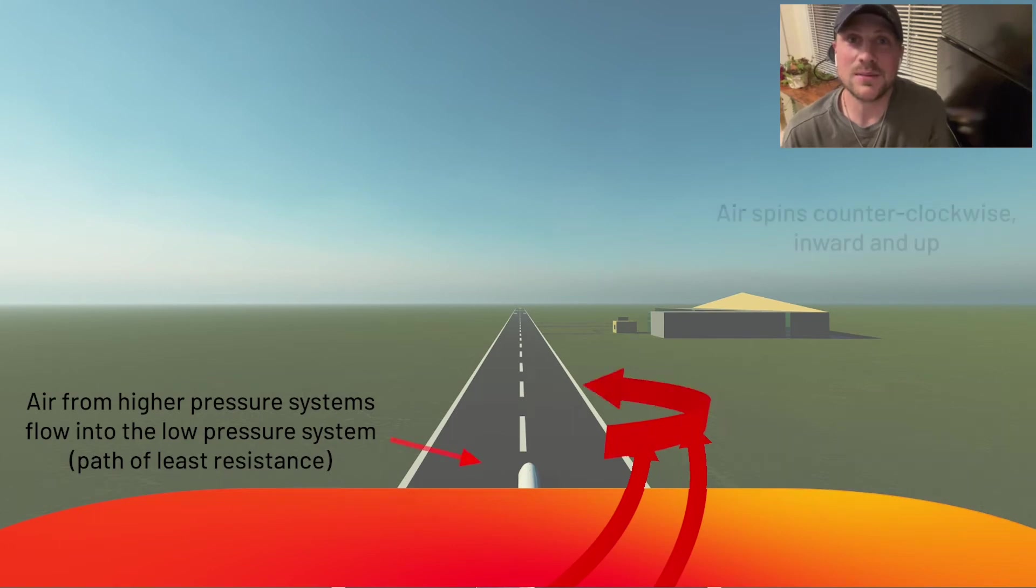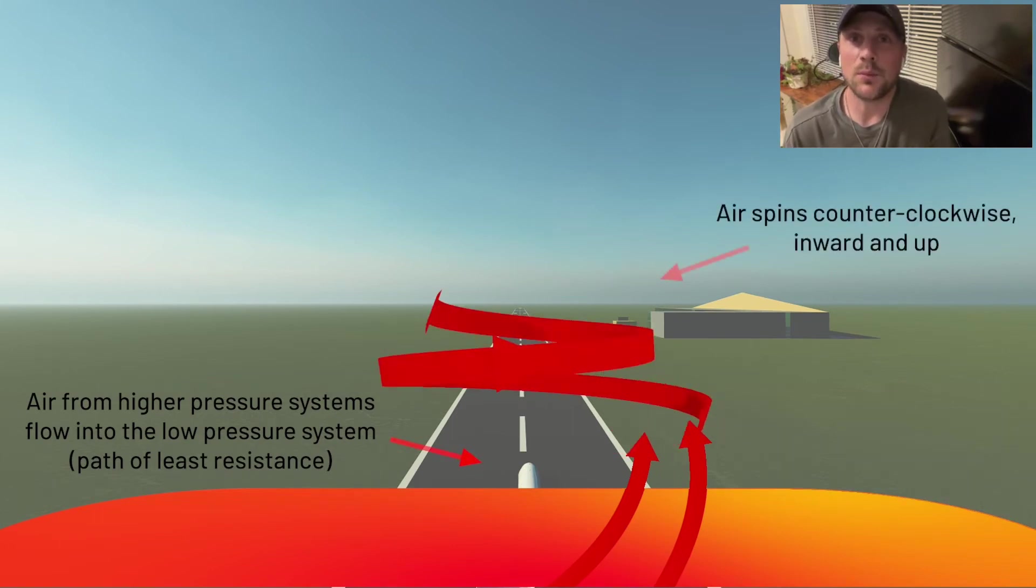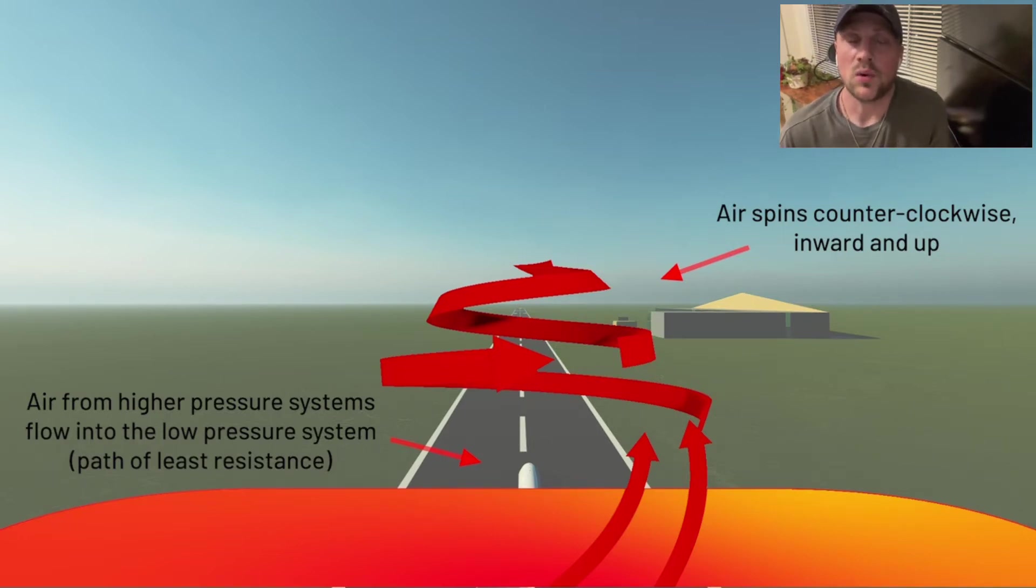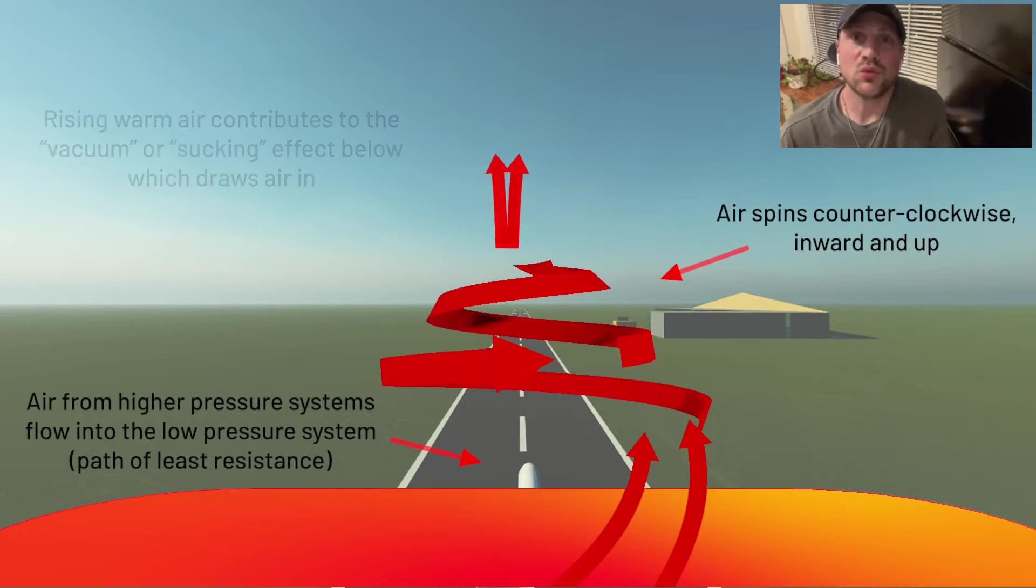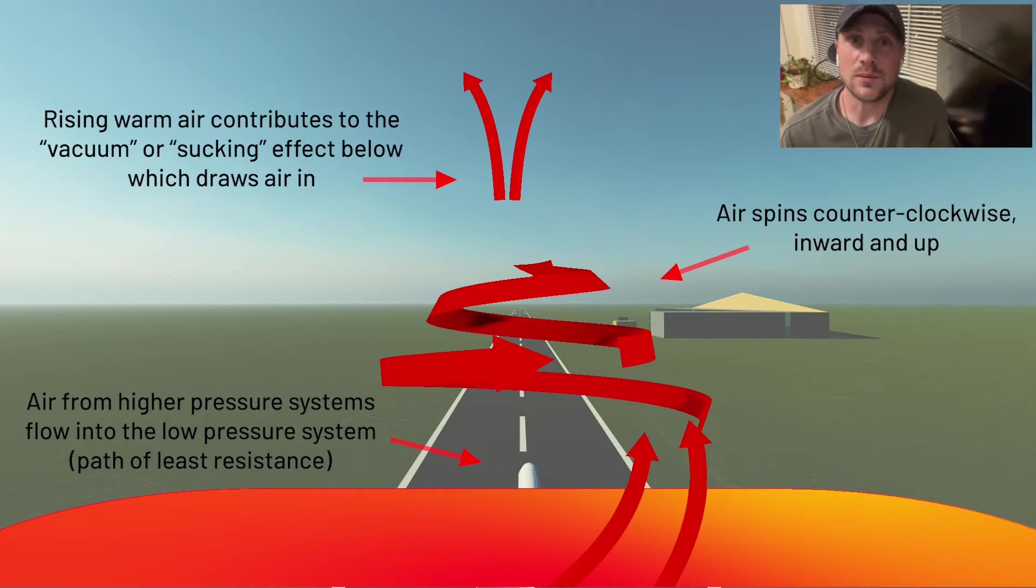As the air enters the system, it spins inward and upward in the counterclockwise direction when in the northern hemisphere. Again, in the southern hemisphere, it spins the opposite direction. We'll explain why this is in a little bit. As the warm air continues to rise, it contributes to this vacuum or sucking effect that draws air in.